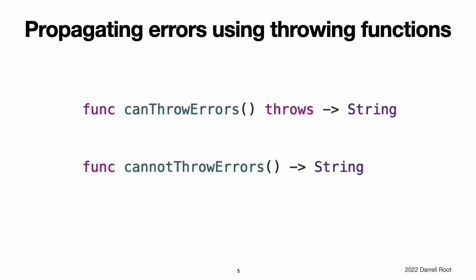Propagating Errors Using Throwing Functions. To indicate that a function, method, or initializer can throw an error, you write the throws keyword in the function's declaration after its parameters. A function marked with throws is called a throwing function. If the function specifies a return type, you write the throws keyword before the return type. A throwing function propagates errors that are thrown inside of it to the scope from which it is called.